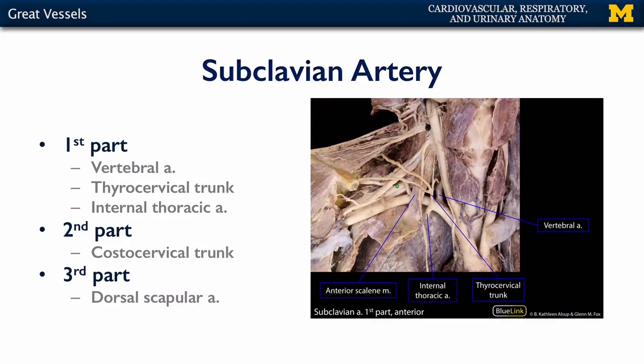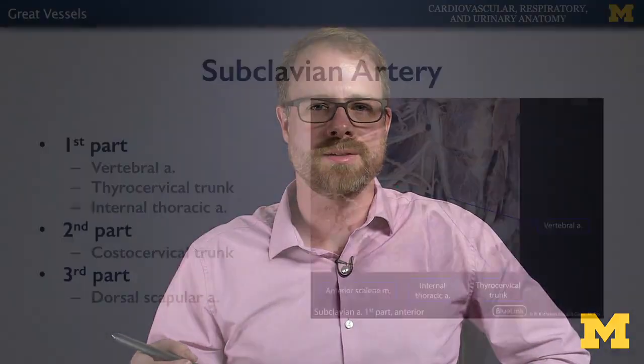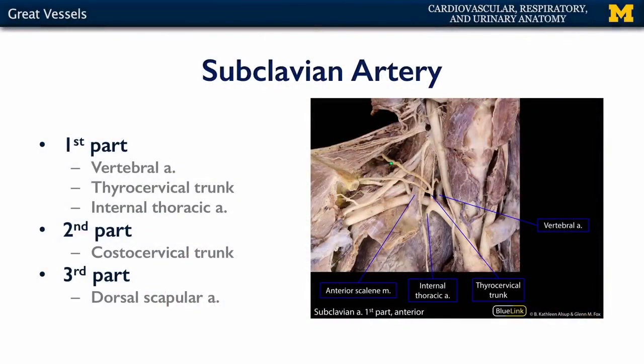The dorsal scapular artery supplies blood to some of the back muscles: rhomboid major, rhomboid minor, and levator scapulae. While this typically arises from the third part of the subclavian, it may also arise from the transverse cervical artery — in about a third of the population, the dorsal scapular artery is a branch of the transverse cervical artery.